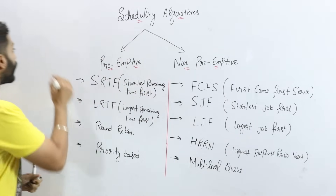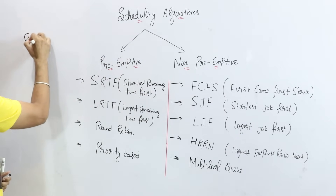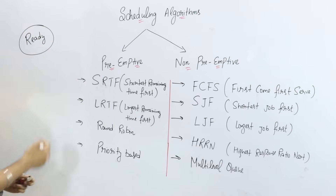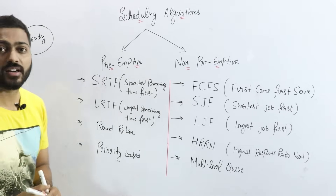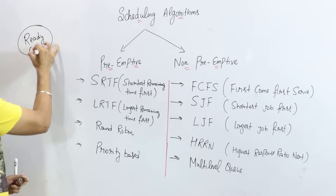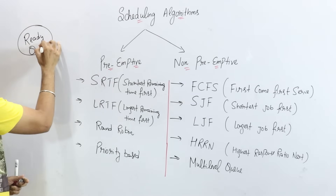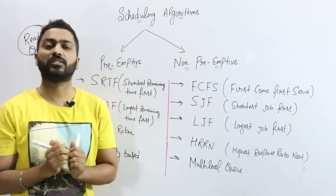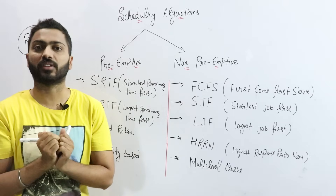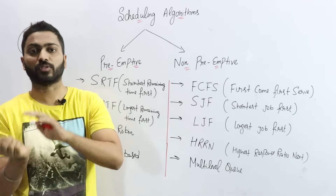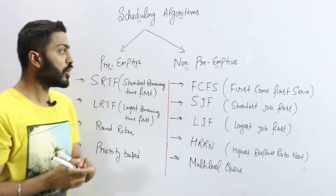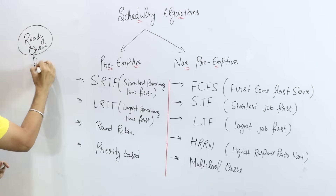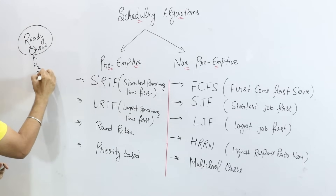According to the degree of multi-programming, we try to keep multiple processes in the ready queue. We use different queues for processes to execute, and in the ready queue we take more and more processes.